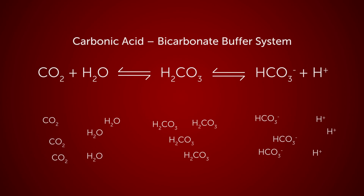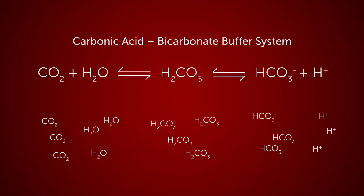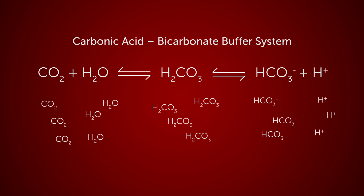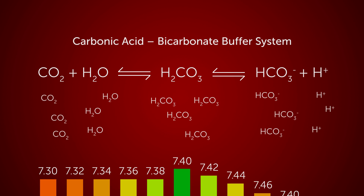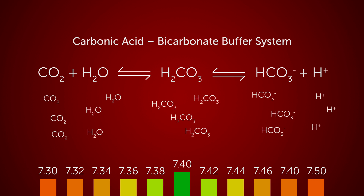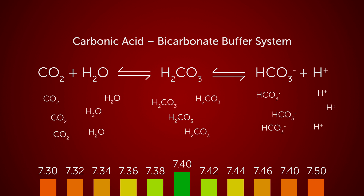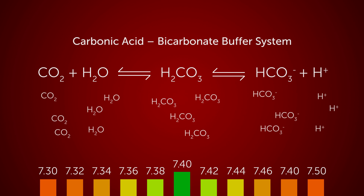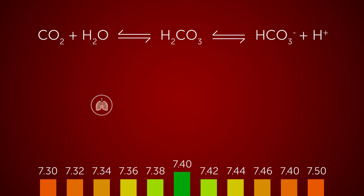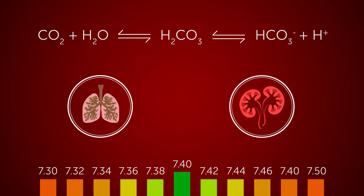But why bicarbonate? The ideal pH of blood at 7.4 is actually outside the buffering range of bicarbonate. This means that other organs such as the lungs and kidneys must also aid the buffering system in order to maintain a strict regulation of blood pH.